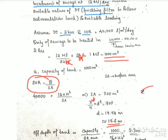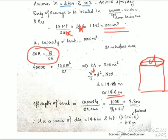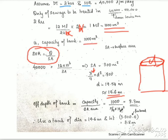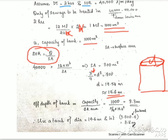The surface area of the circular tank is π/4 × D² equals 300 square meters. Therefore the diameter D is 19.6 meters. The depth is calculated as capacity divided by surface area. The effective depth equals 1000 cubic meters divided by 300 square meters, giving 3.3 meters. Adding freeboard of 0.5 meters, the overall depth is 3.8 meters.